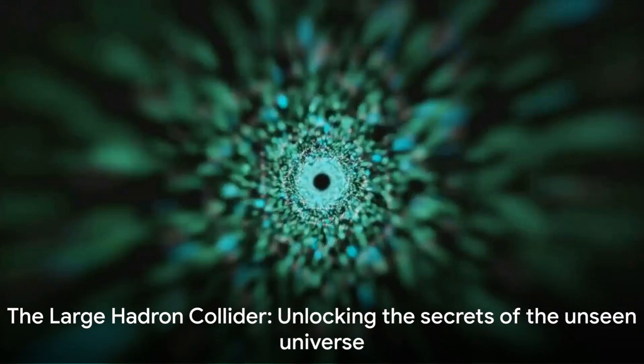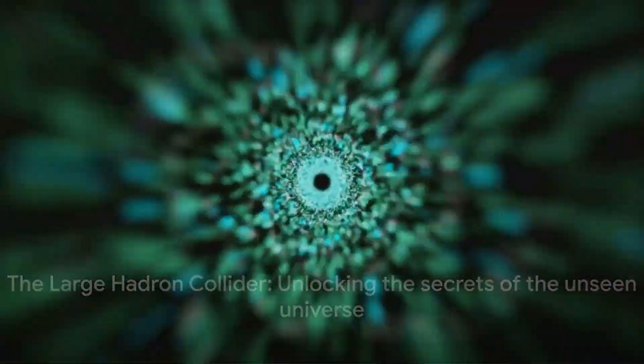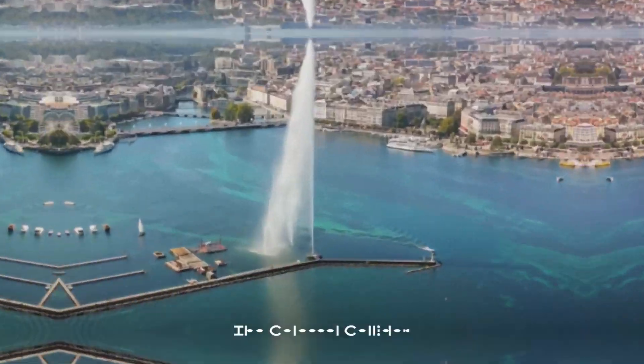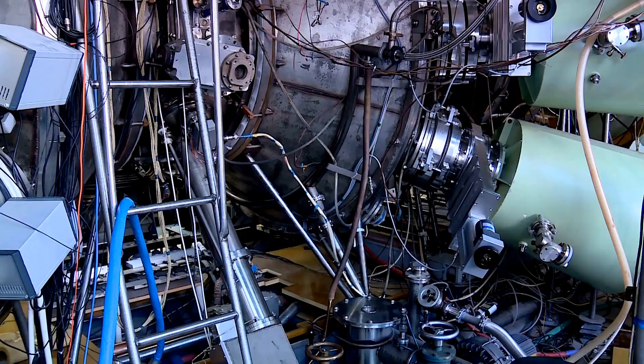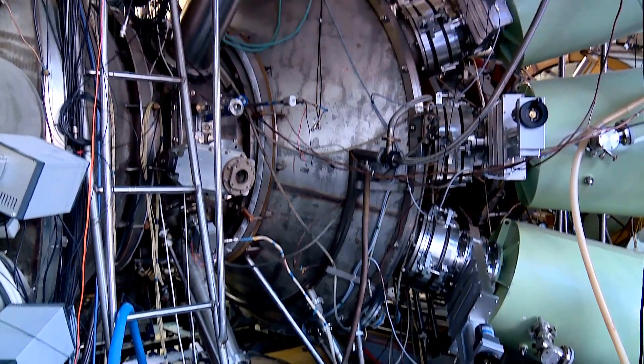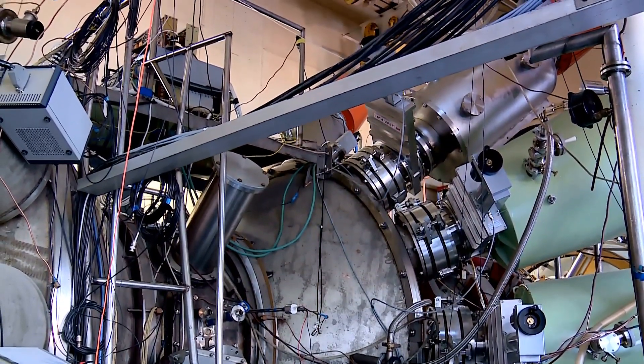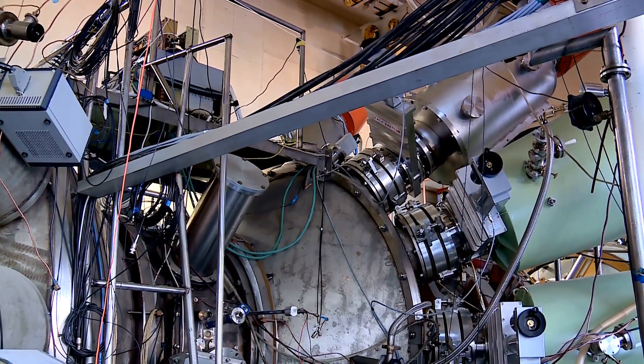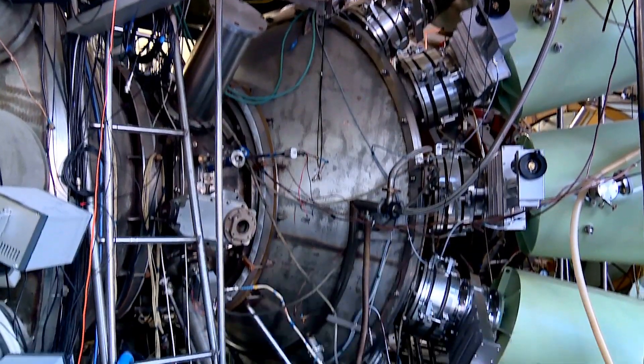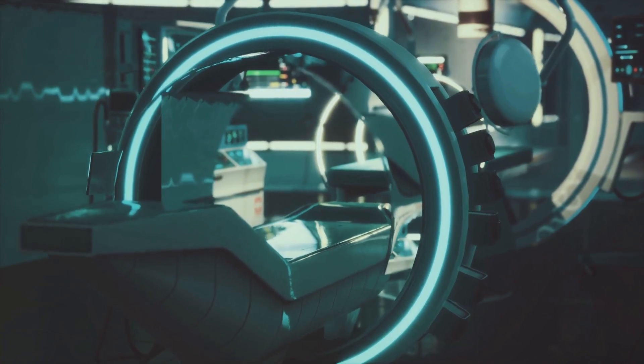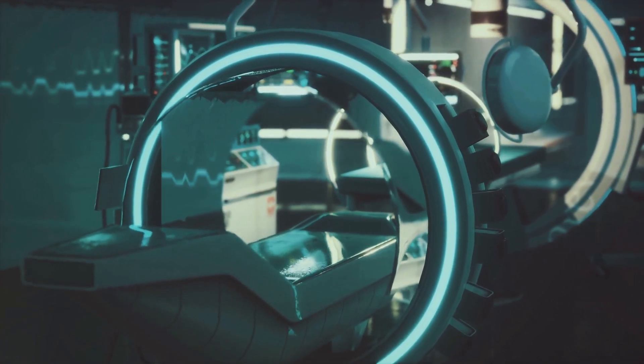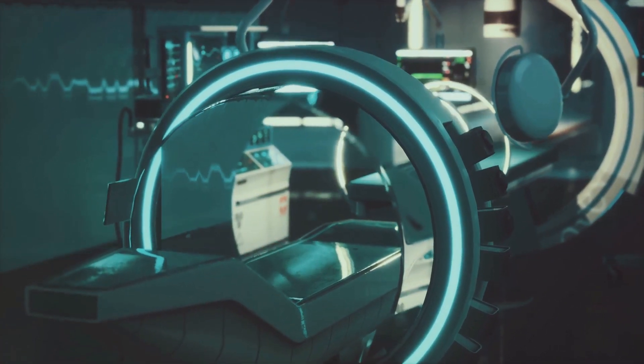The key to these secrets lies within the world's largest machine, the Large Hadron Collider. Imagine an engineering marvel so vast it crosses international borders. This isn't the premise of a science fiction novel but rather the reality of the Large Hadron Collider, the world's most powerful particle accelerator. Nestled beneath the charming landscape of the Swiss-French border, the Large Hadron Collider, or LHC, stretches an impressive 17 miles in circumference.